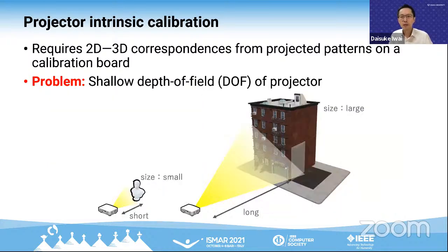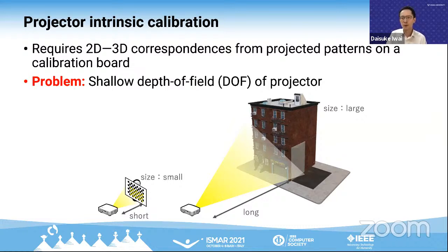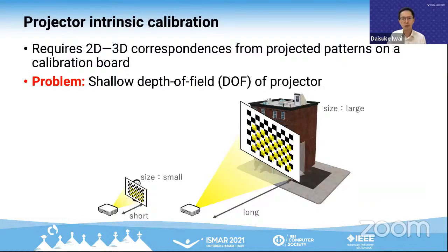Projector intrinsic calibration is essentially the same as camera calibration based on the pinhole camera model, because the projector and the camera share the same optical mechanism except the light directions. Specifically, we obtain correspondences between 2D projector image coordinates and 3D world coordinates by projecting spatial patterns onto a checkerboard and calibrate the projector. But this method only works when the projected pattern appears focused on the board. Normally, a projector's aperture is designed wide to achieve bright projection, so the depth of field is typically very shallow.